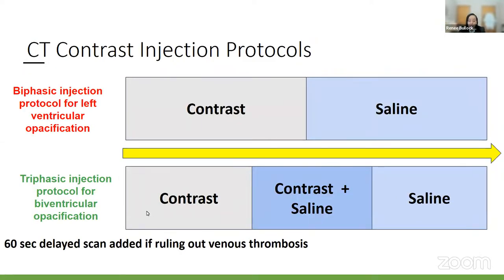Injection protocols are another important consideration. There are two main types. A biphasic injection protocol uses contrast followed by saline and is used primarily when looking at left-sided structures and coronary arteries. For congenital heart disease, we often need to assess the right side of the heart — especially in transposition of the great arteries (DTGA) and other pathologies with tricuspid flow. In these patients, a triphasic injection protocol is used: contrast first, followed by a contrast-saline mixture, then saline. This is the protocol we use most frequently for congenital cases.